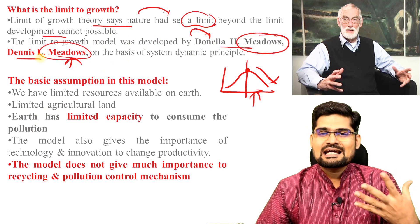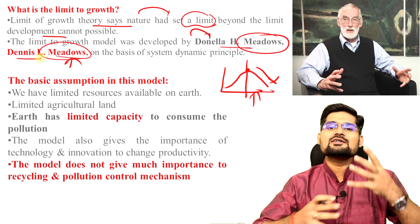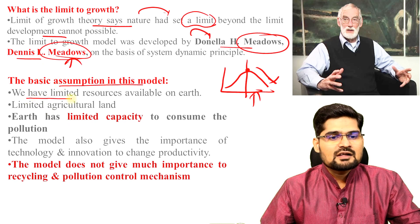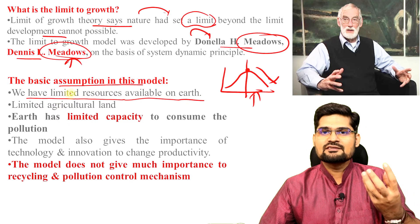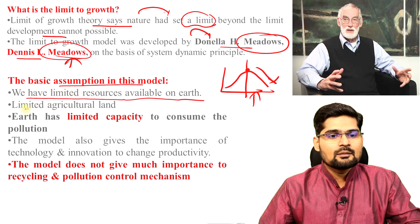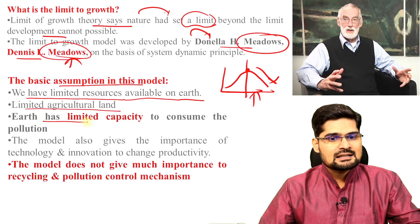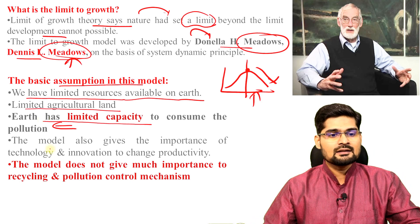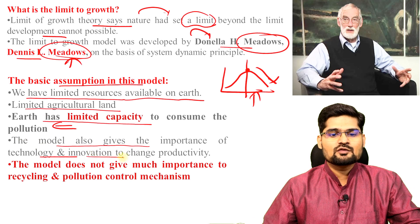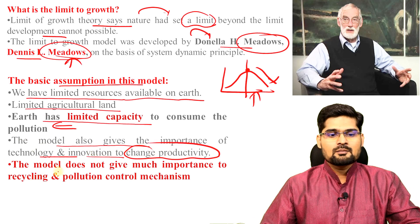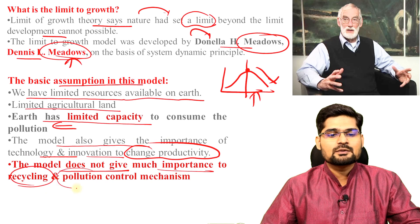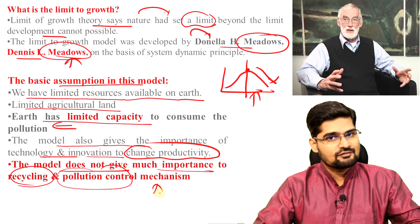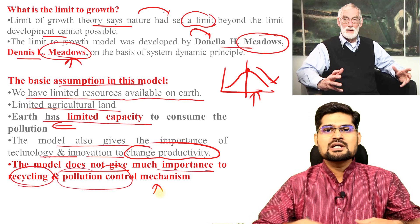What were the five basic assumptions of this model — how humanity is going to collapse or face a downfall? First, limited resources available on earth — basically fixity and finite resources. Second, limited agricultural land for people. Third, the earth has a limited capacity to absorb the pollution we are creating. Fourth, the model gives importance to technology and innovation to change productivity. Fifth, the model does not give much importance to recycling and pollution control mechanisms, because in 1968–72 this mechanism was not that developed.